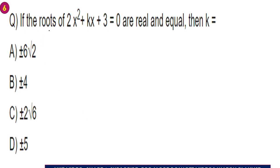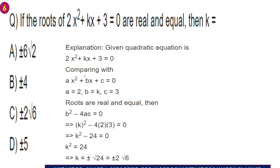Next problem: if the roots of 2x squared plus kx plus 3 equals 0 are real and equal, then k equals? Comparing with ax squared plus bx plus c equals 0, we have a equals 2, b equals k, c equals 3. For real and equal roots, b squared minus 4ac equals 0, so k squared minus 4 into 2 into 3 equals 0.